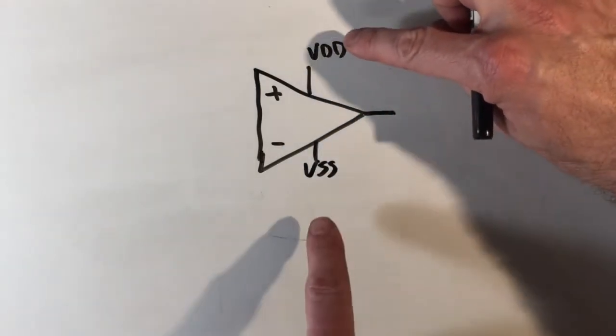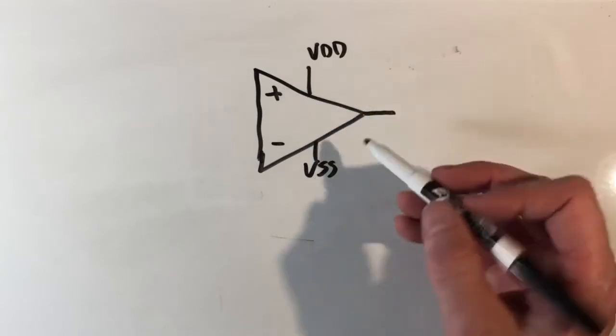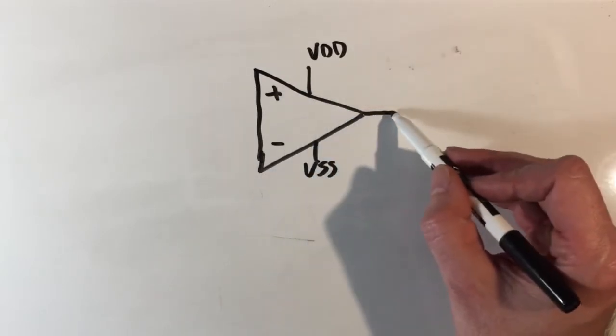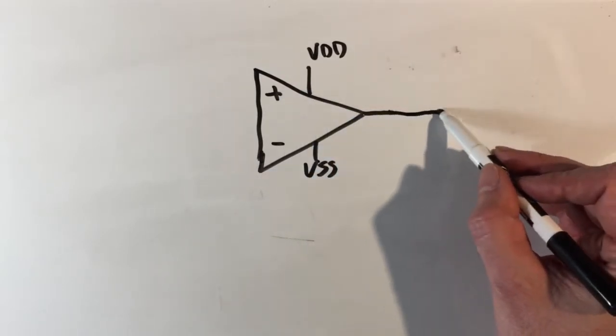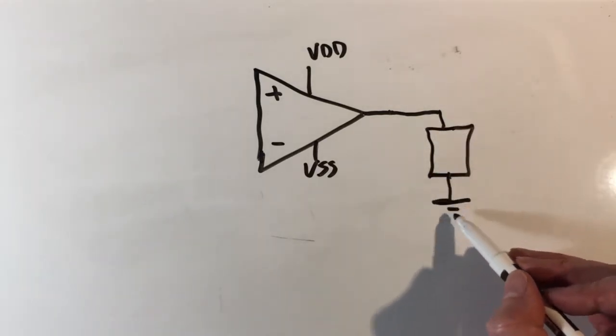These two supplies provide the power to the op amp to do the thing that it does - to amplify and to deliver power out to the load. There's some kind of load out here, represented as a box, usually connected to ground.